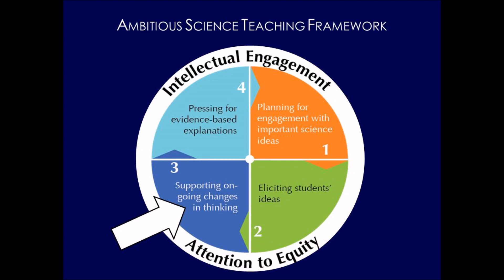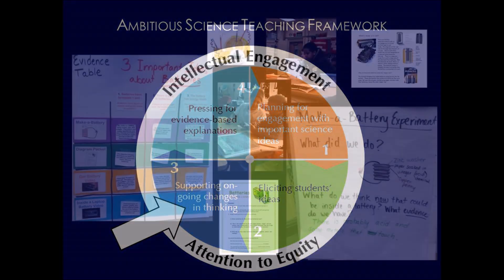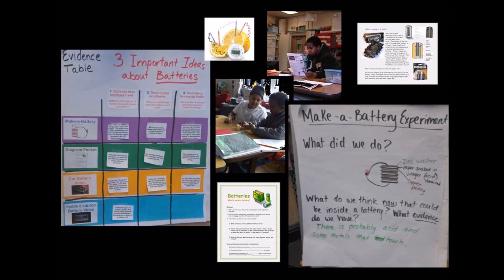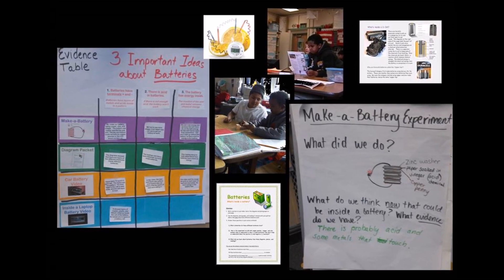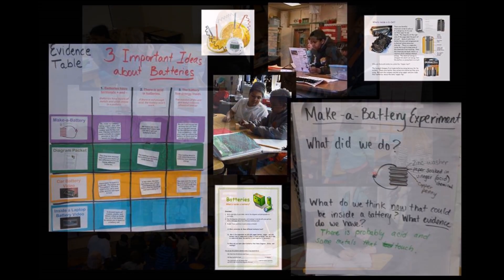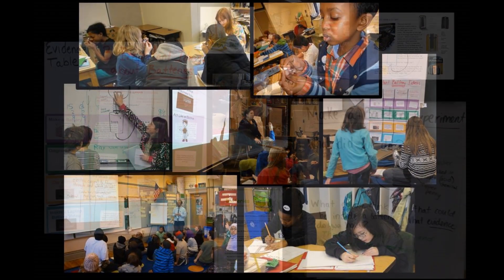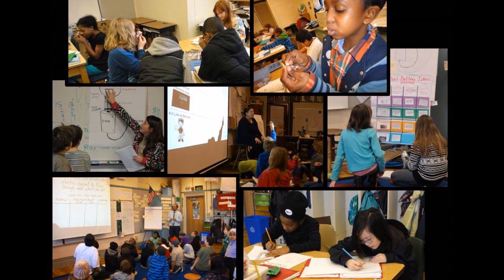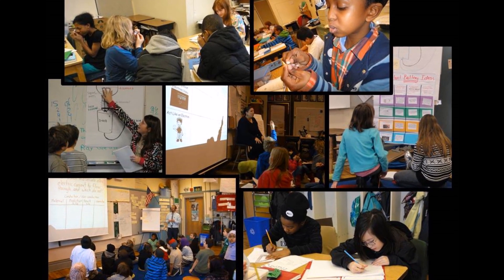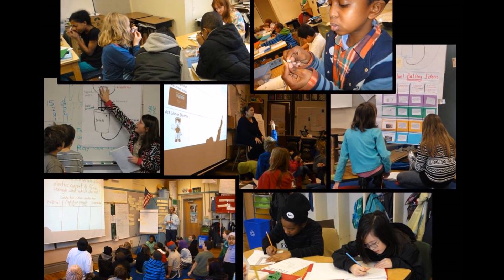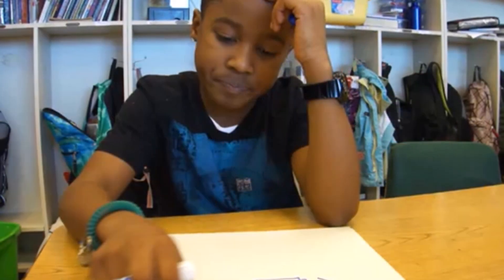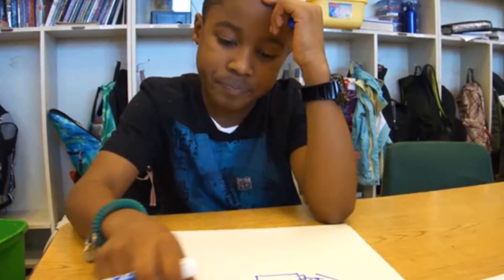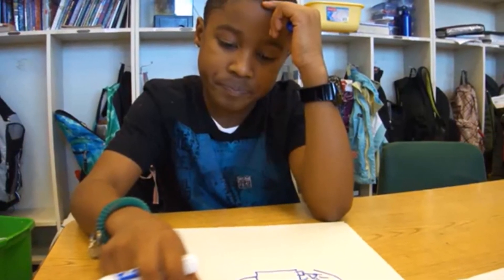In this circuits unit, students built their own batteries, tested conductors and non-conductors, observed parts inside light bulbs, learned about electrons, and gathered evidence for how and why batteries, light bulbs, and wires all work together to make a circuit. In this next clip, we hear from the same student again near the end of the circuits unit after eight days of sense-making activities. Listen to how he now describes how a circuit works.